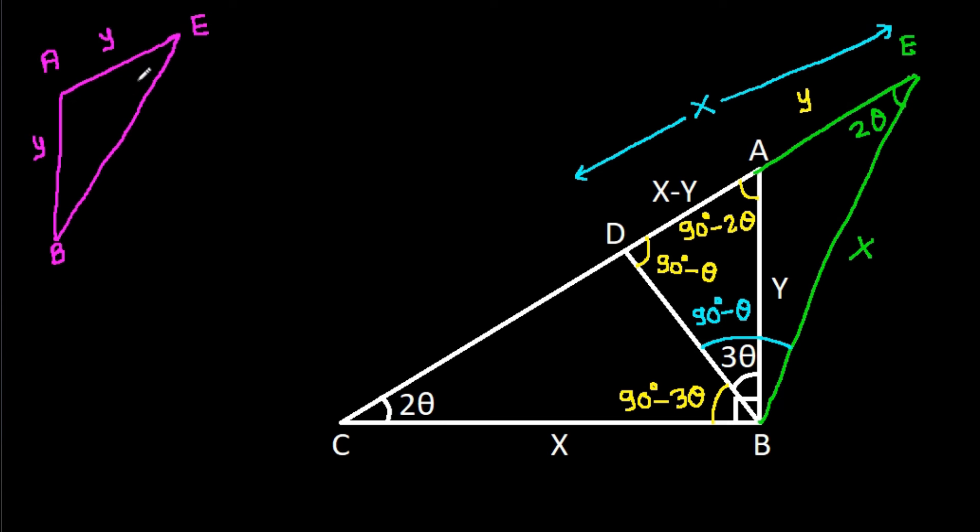In triangle EAB, EA is y and AB is y, so these two angles are equal. This angle is 2 theta, so this angle is also 2 theta. Now angle DBE is 90 degrees minus theta, and angle DBE also equals 3 theta plus 2 theta, so 5 theta equals 90 degrees minus theta, giving 6 theta equals 90 degrees. Therefore theta equals 90 degrees over 6, which is 15 degrees.